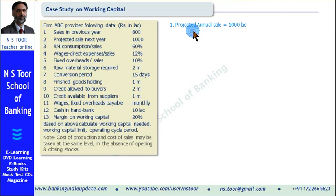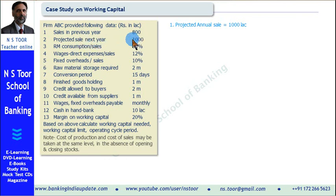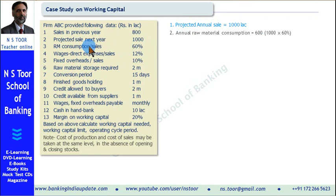Let us start with the calculation. We shall take the projected annual sale — for working capital calculation, the past year sale will not be taken into consideration; future projected sale will be taken. Raw material consumption to sales ratio is 60%, hence 60% of projected sale of Rs. 1000 lakh gives Rs. 600 lakh as the amount of raw material to be consumed in one year.